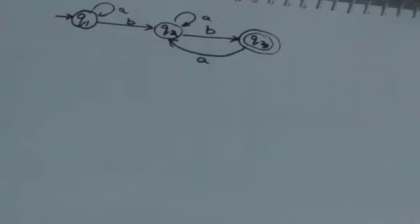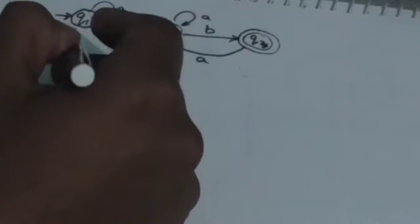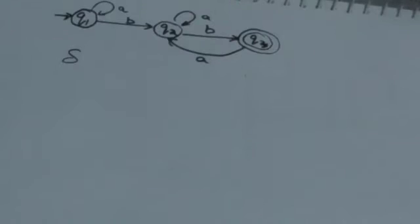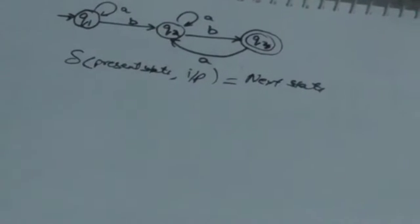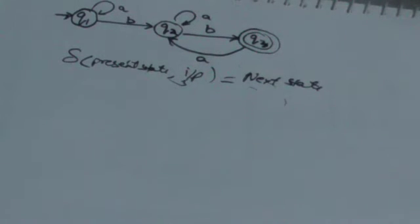Hi friends. Again, look at the same finite automata here. Q1 is the initial state and Q3 is a final state. I have told you in the first tutorial about the transition function delta. This transition function takes two inputs: first, the present state, and second, the input symbol, and it gives the next state as the output. It shows that when the machine is in a present state and reads an input, it will jump to that state.